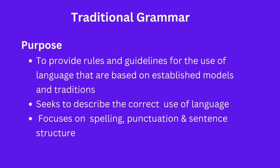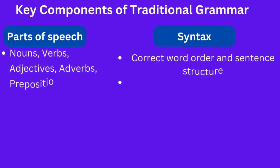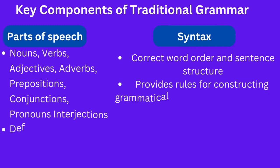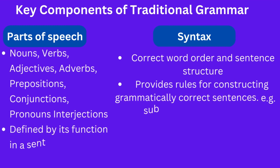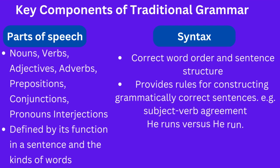The components of traditional grammar include parts of speech, which identifies parts of speech including nouns, verbs, adjectives, adverbs, prepositions, conjunctions, pronouns, and interjections. A part of speech is defined by its function in a sentence — the kinds of words it can modify or be modified by.